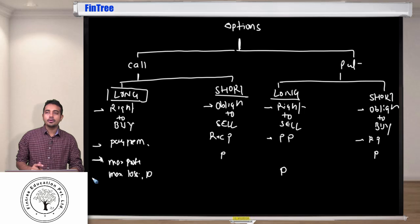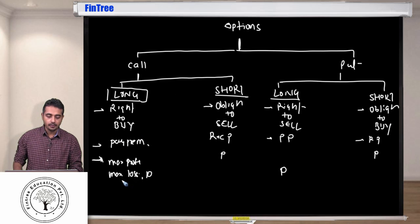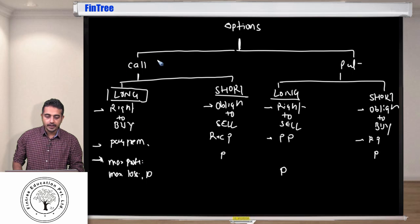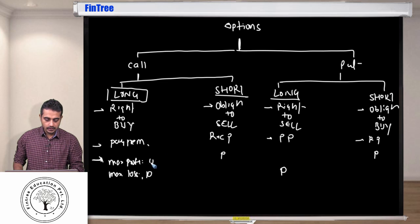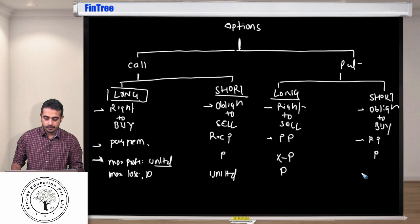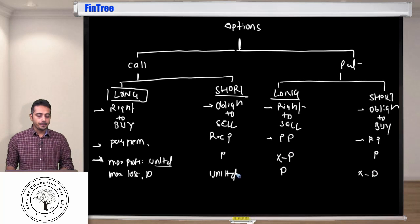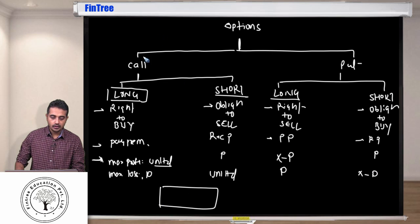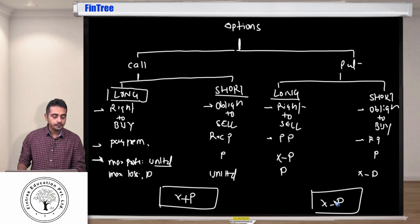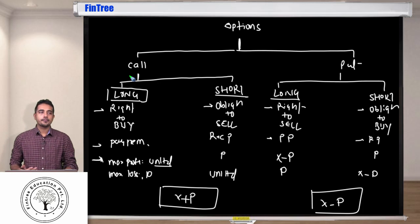For the call option: on the long side, maximum loss is the premium; on the short side, maximum profit is the premium. The maximum profit for a long call is unlimited, and correspondingly the maximum loss for a short call is unlimited. For the long call, the maximum profit is unlimited and the loss is the premium paid. The break-even point for a call option is X plus P, and for a put option it is X minus P.